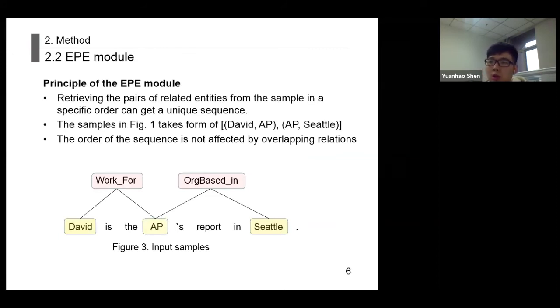Next, I will introduce the core of the model, the EPE module. We found that retrieving the pairs of related entities from the sample in a specific order can get a unique sequence. For example, when the search order is from left to right, we can get the form of David, AP, Seattle. We also found the order of the sequence is not dependent on whether or not there are overlapping relations among the entities. Based on the above analysis, we propose the EPE model to model the order between related entity pairs.